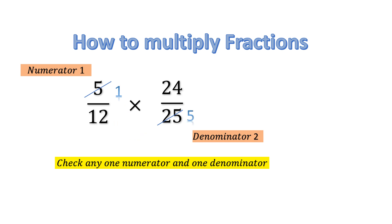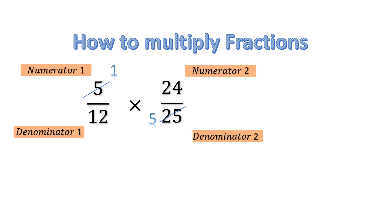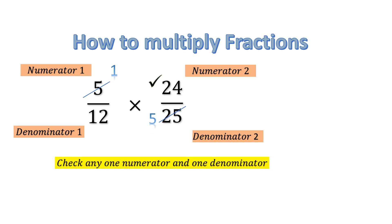Our new numerator 1 becomes 1 and our new denominator 2 becomes 5. Now let's check the other pair: numerator 2 and denominator 1, that is 24 and 12. What are the factors of 12? 12 has the factors 1, 2, 3, 4, 6, and 12.